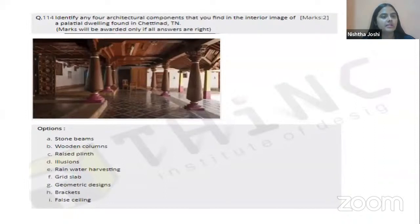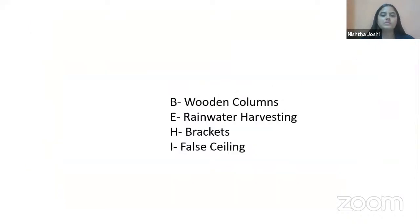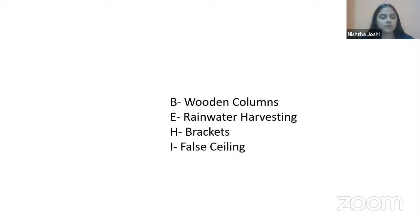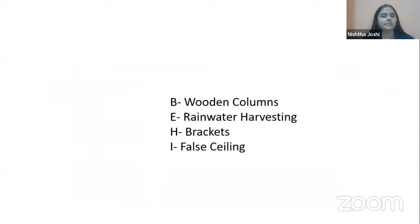The next question shows an image of a palatial dwelling found in Chettinad, Tamil Nadu. Identify four architectural components. We can see the use of many materials, mostly wood, with many wooden columns visible. The four correct options are: B (wooden columns), E (rainwater harvesting system — visible through the central courtyard for natural water flow), H (usage of brackets — members attached to columns to take roof load), and I (usage of fall ceiling — flat wooden ceiling beneath a pitched roof).